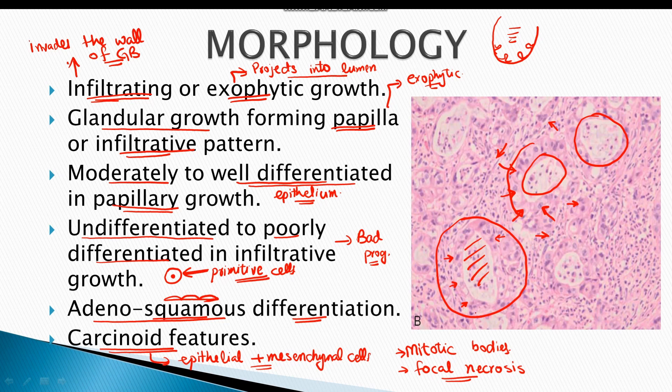To recall the morphology, there are five things to explain in the histology of a tumor. First, the growth pattern — either infiltrating or exophytic, with tumor cells forming gland-like proliferations (adenocarcinoma). Second, cell differentiation — cells can be moderately to well differentiated in papillary/exophytic growth, and undifferentiated to poorly differentiated in infiltrative growth. Third, mitosis — there are extensive mitotic bodies in malignant tumors.